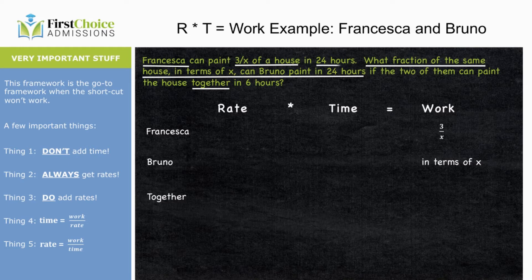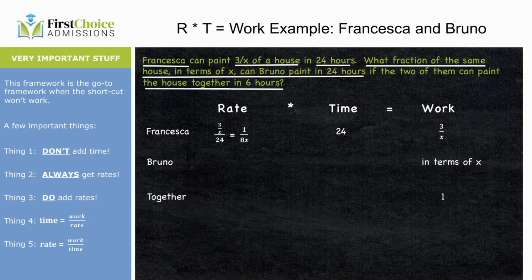It takes Francesca 24 hours to paint three over X of the house. If we know Francesca's work is 3 over X and her time is 24, we can figure out her rate: rate is work over time, or 3 over X divided by 24, which turns out to be 1 over 8X. Now, for the 'together' row: they can paint one whole house in six hours, so their work is one and their time is six, making their together rate one-sixth.